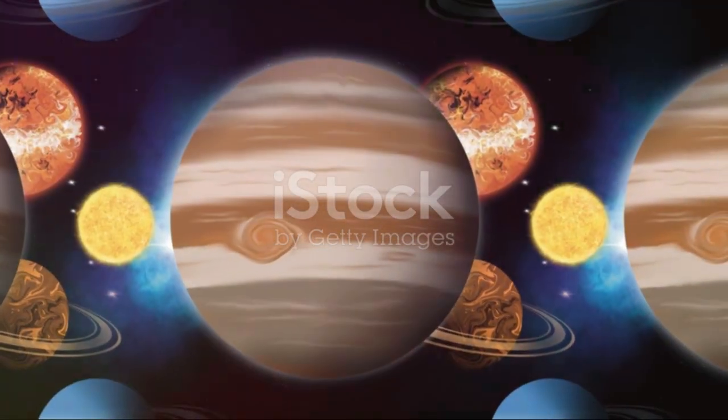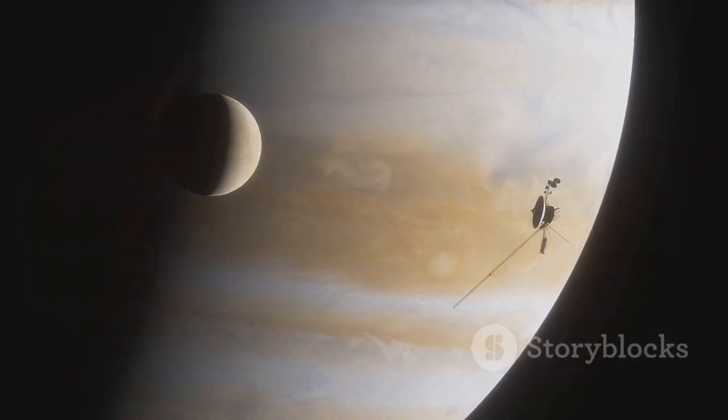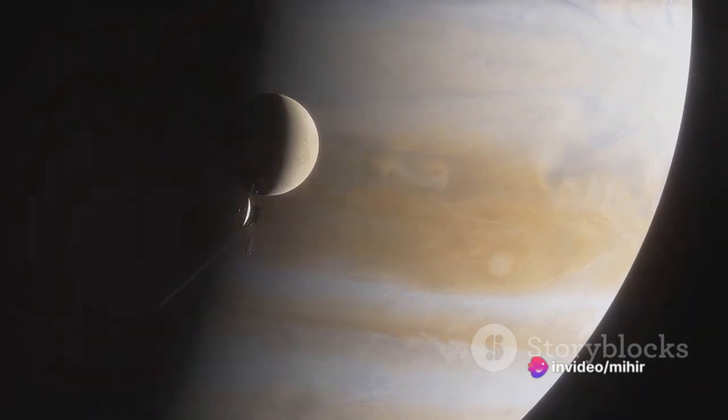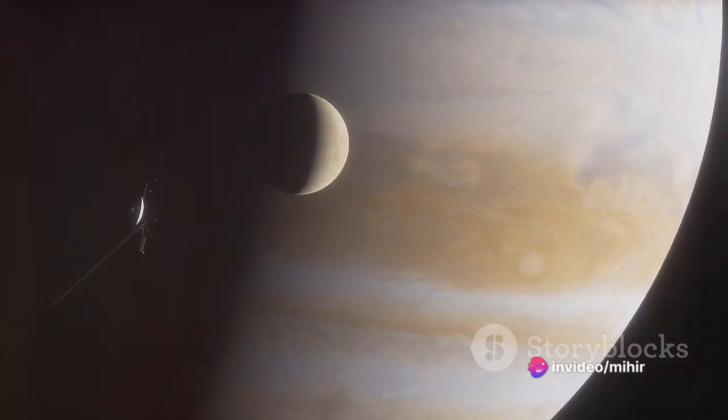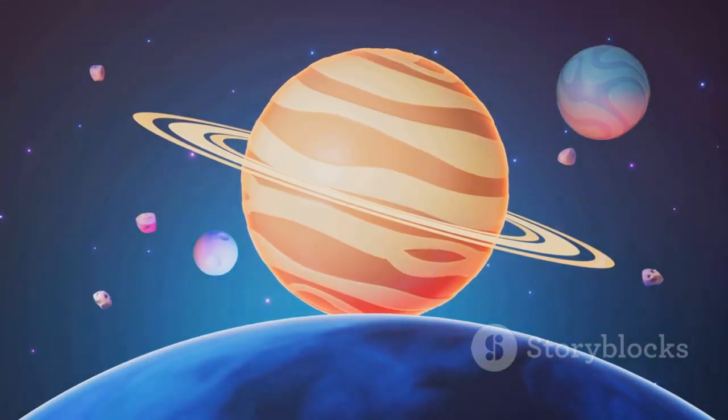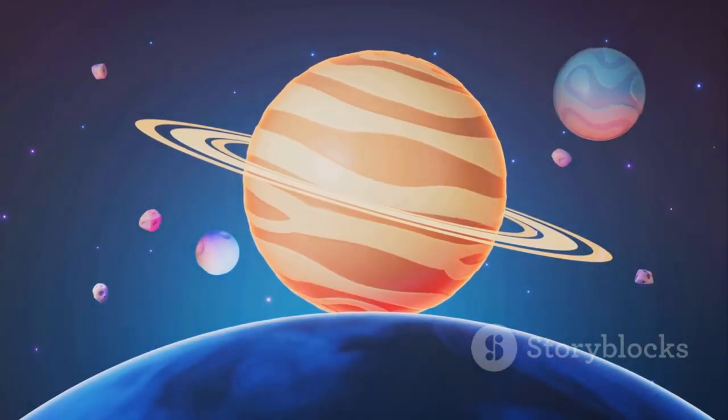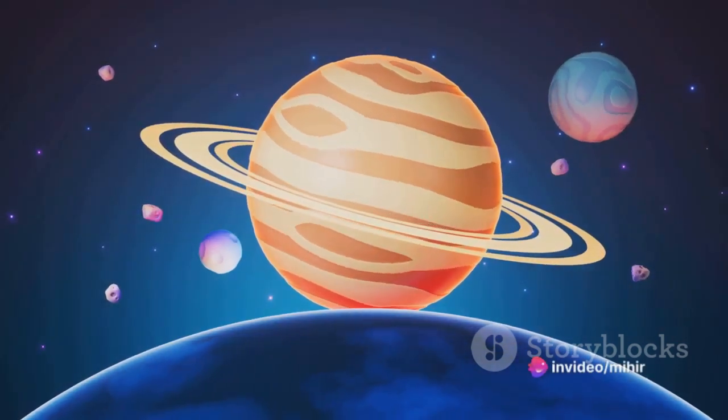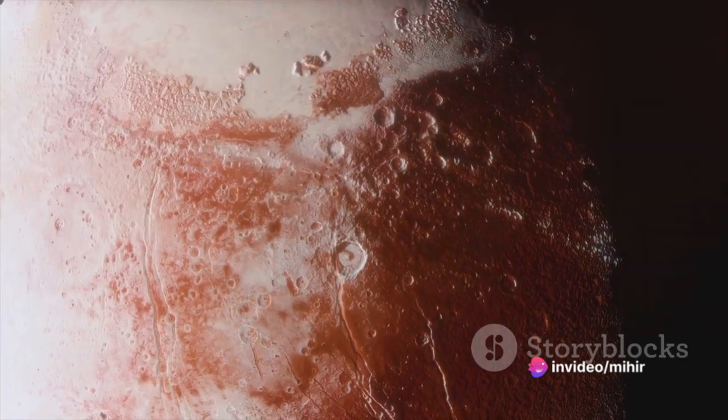We then ventured into the territory of the gas giants. Jupiter, with its great red spot, a storm that's been raging for centuries, and its four largest moons, each a world unto itself. Saturn, the jewel of our Solar System, with its spectacular rings made of ice and rock. Uranus and Neptune, the ice giants, with their intriguing and complex weather systems.